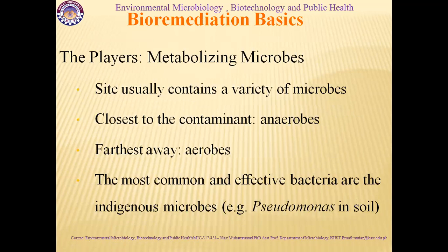Sites metabolizing pollutants usually contain a variety of microbes. Closest to the contaminant, conditions are anaerobic; furthest away, conditions are aerobic. The most common and effective bacteria are the endogenous microbes, such as Pseudomonas in soil. Whenever pollutants enter an environment, the existing microbial populations either already have the ability to break down the contaminant or adapt over time, using the contaminant as an energy source and degrading it into its basic elemental form.